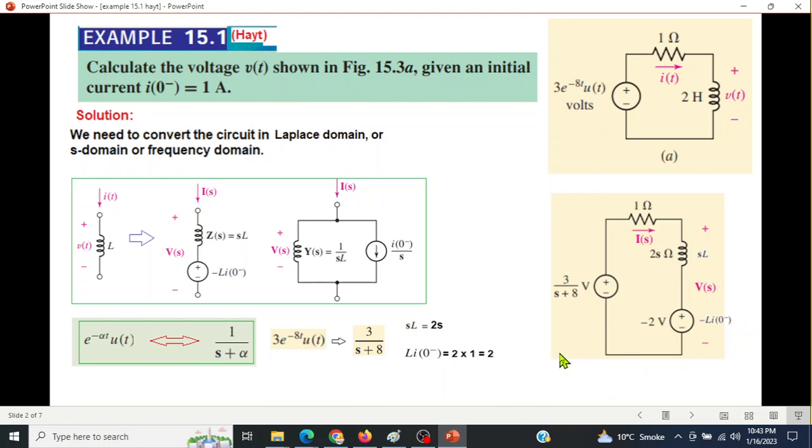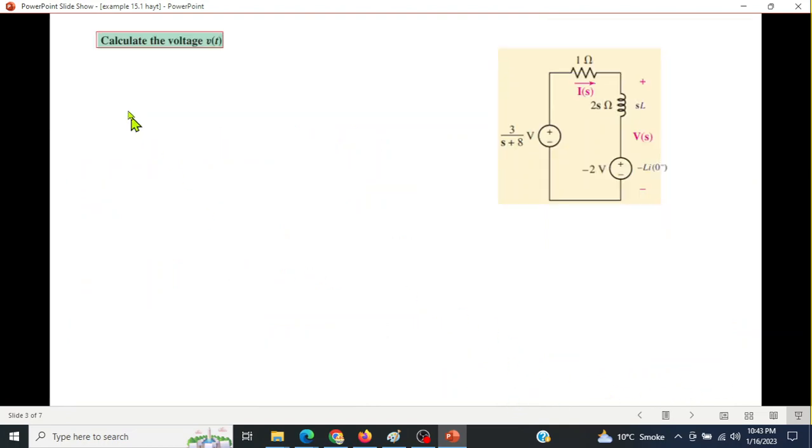Now we'll solve this. We need to solve for V(t), so V(t) in S domain is V(S). To find V(S) we need to calculate first IS. By KVL going from here: -3/(S+8) + IS(1+2S) - 2 = 0. Solving step by step.